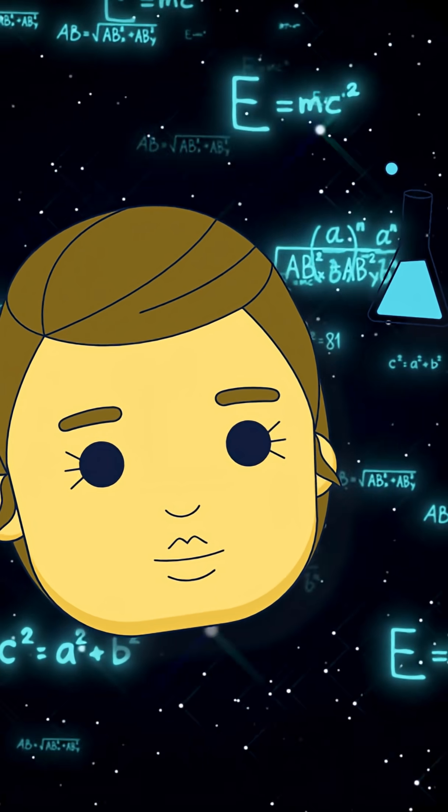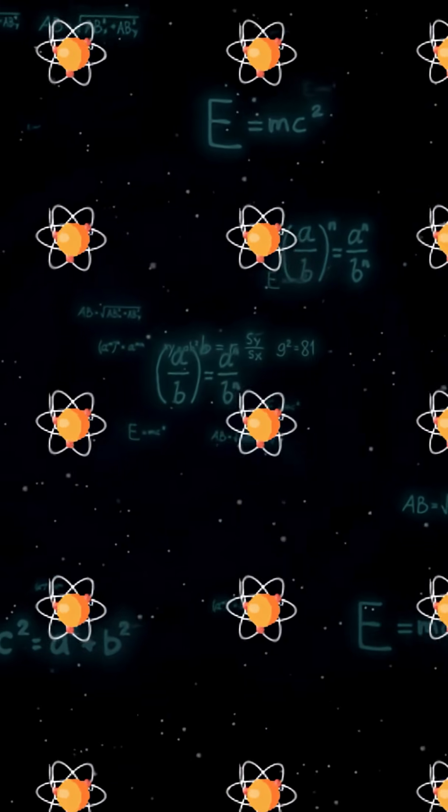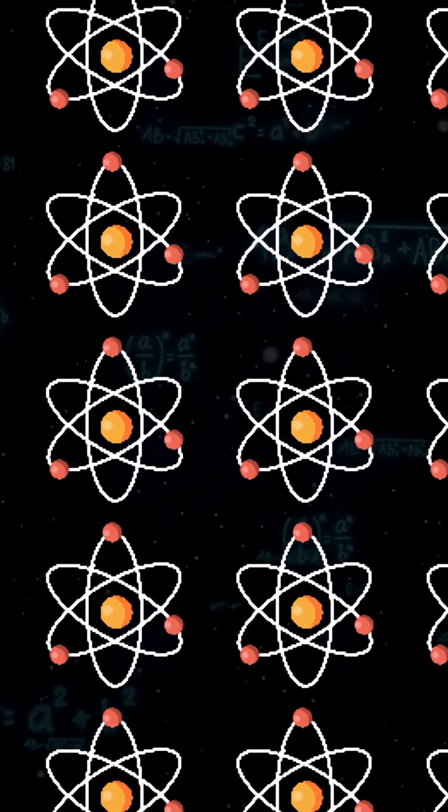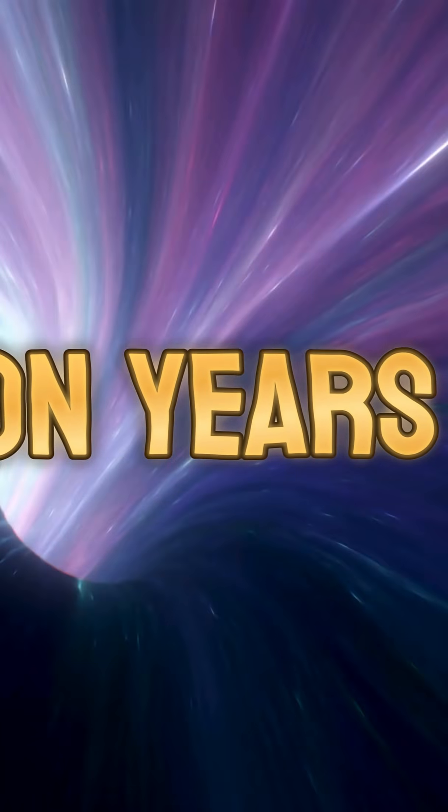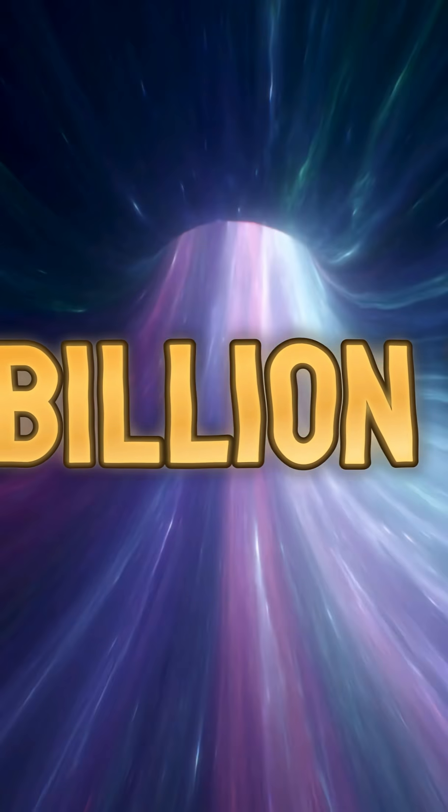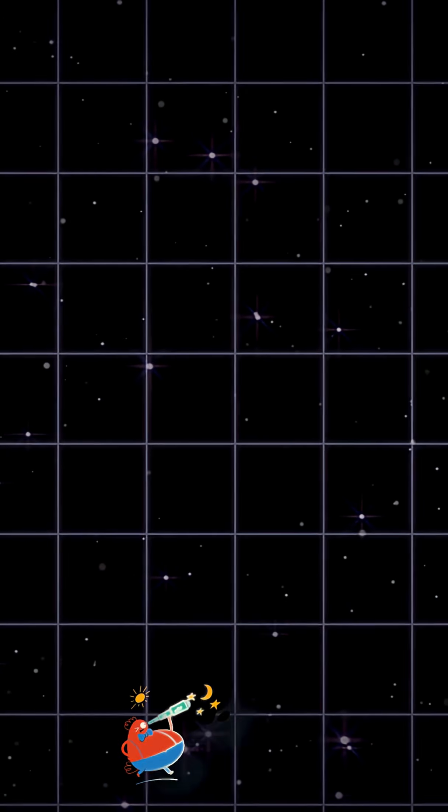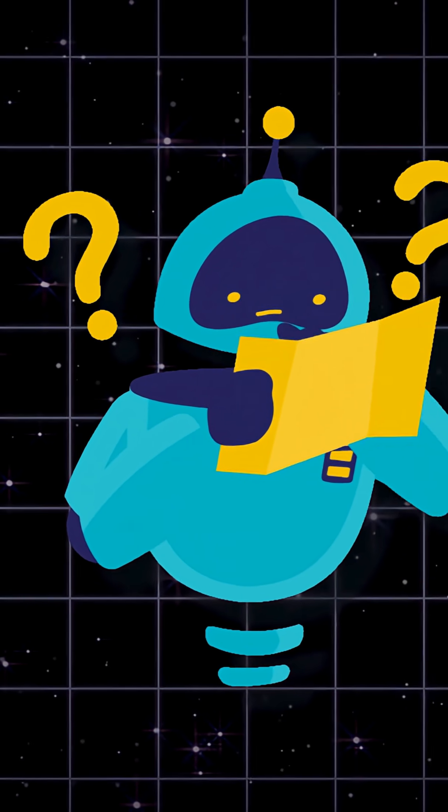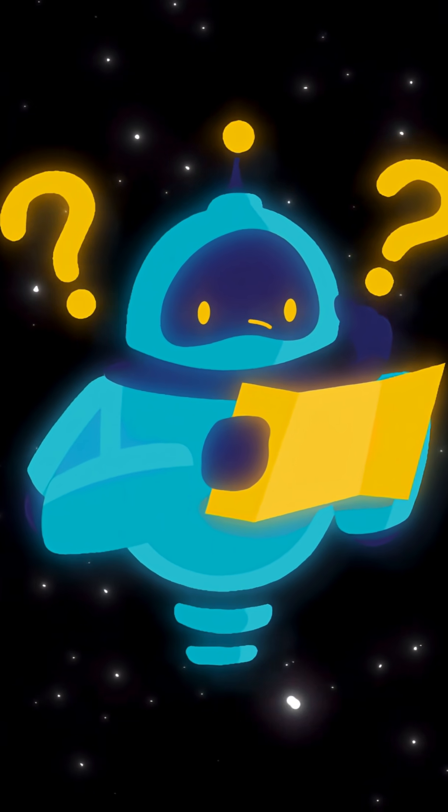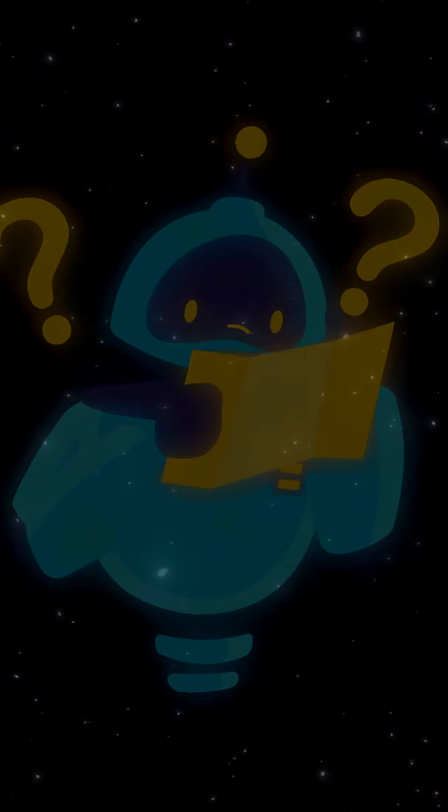The researchers calculated that even if you observed ten billion electrons every second for the entire lifetime of the universe, 13.7 billion years, you'd only see this time reversal happen once. And even then, the particle would only travel back one ten billionth of a second.